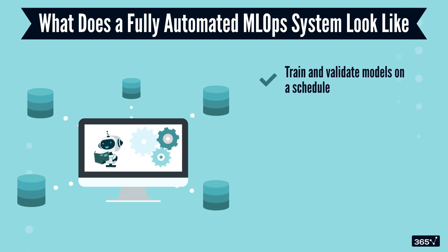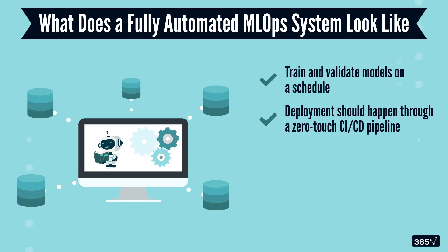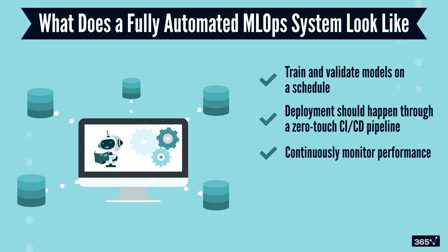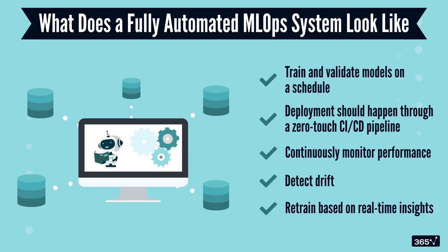It should train and validate models on a schedule or as soon as new data arrives. Deployment should happen through a zero-touch CI/CD pipeline — no manual pushing, no clicking buttons. Once the model is live, the system should continuously monitor its performance, detect drift, and retrain based on real-time insights, all without human oversight.